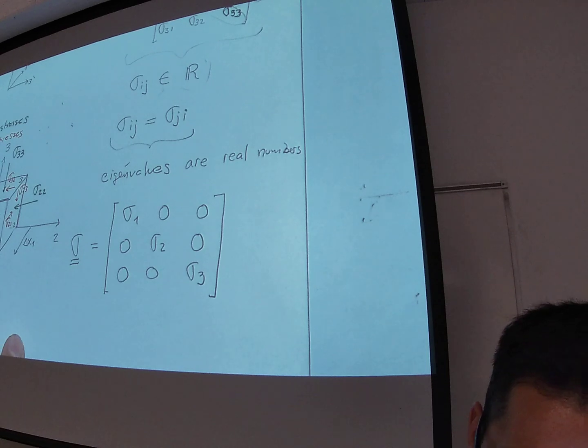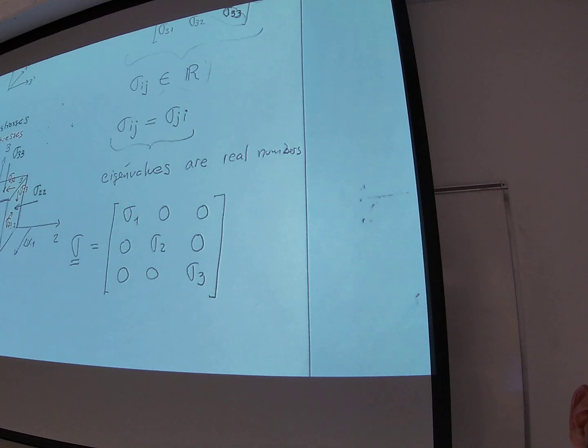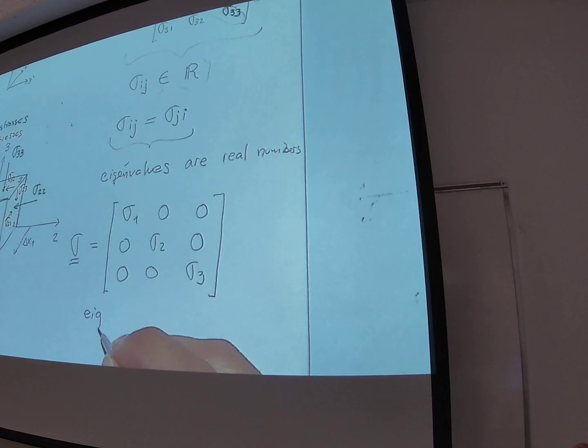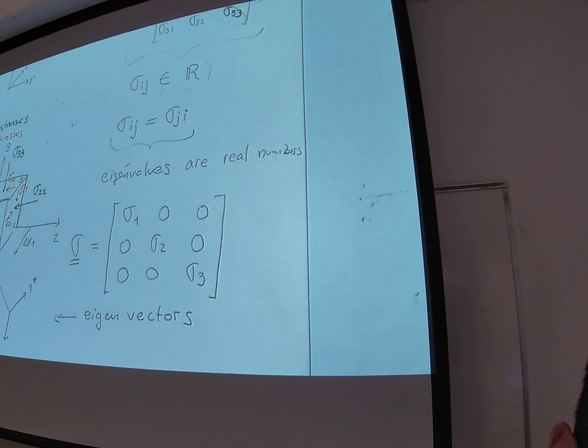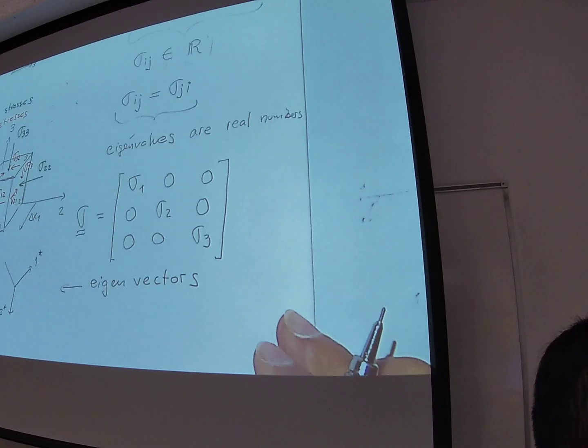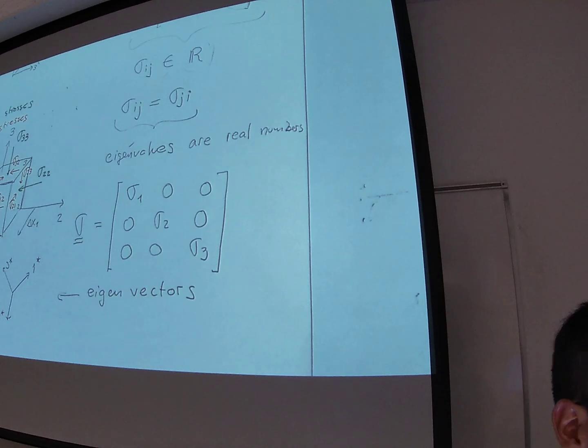In addition to that, of getting eigenvalues, you also get what are called eigenvectors. And the eigenvectors will tell you what is that particular orientation, let's call it star one, two, three, that particular orientation at which this thing happens.